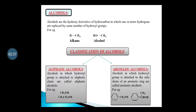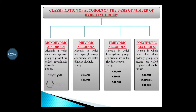On the basis of the number of hydroxyl groups, alcohols are classified as monohydric, dihydric, trihydric, and polyhydric alcohols. Monohydric alcohol — what do you understand by the term monohydric? Mono means one, hydric means hydrogen, alcohol means OH group. It means one hydrogen is replaced by one hydroxyl group. Alcohols where one hydroxyl group is present are called monohydric alcohols.